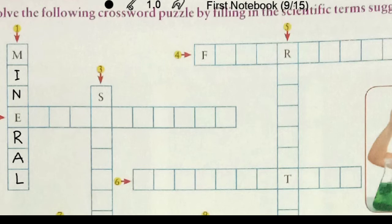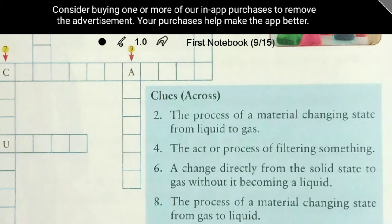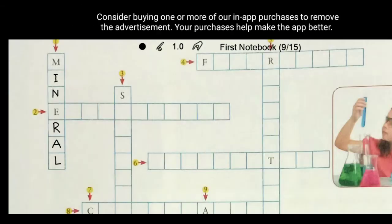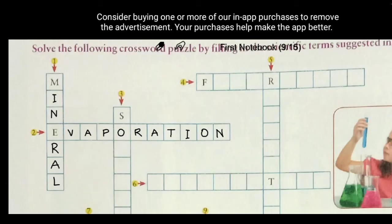Clue 2: The process of a material changing state from liquid to gas. What is this process called? Yes, you are right — it is evaporation. We write evaporation here.